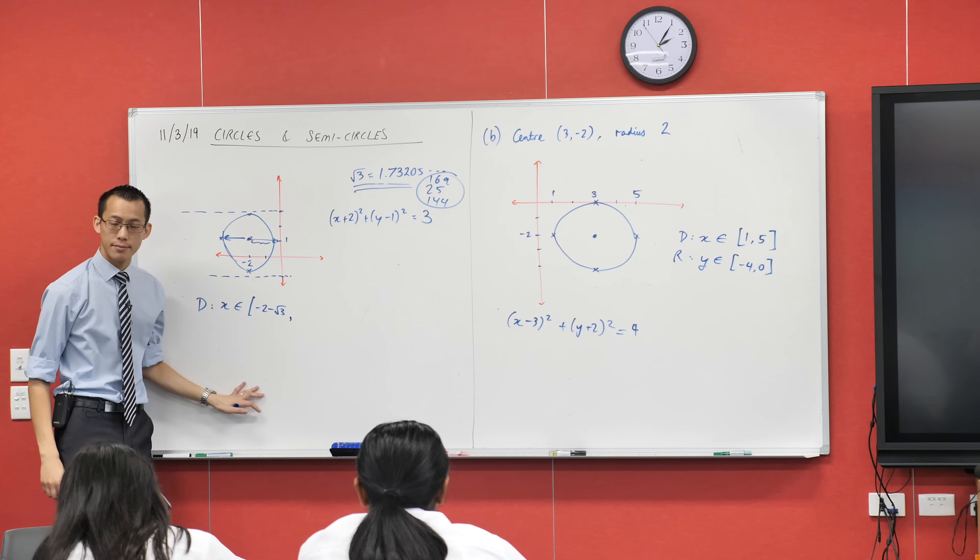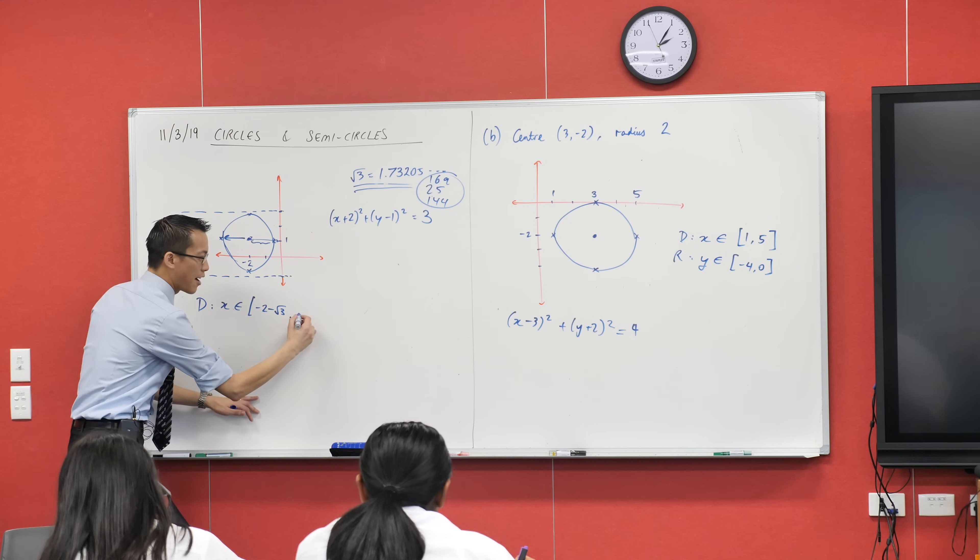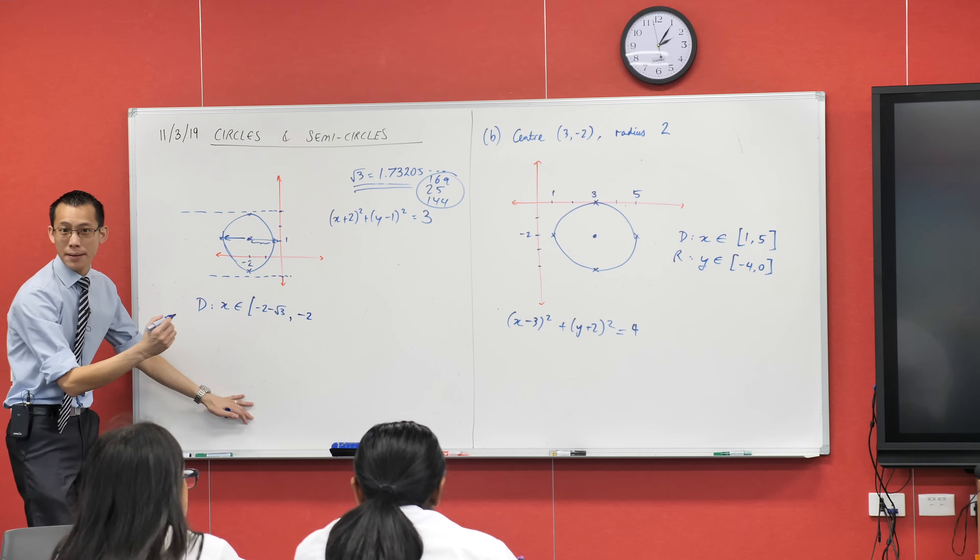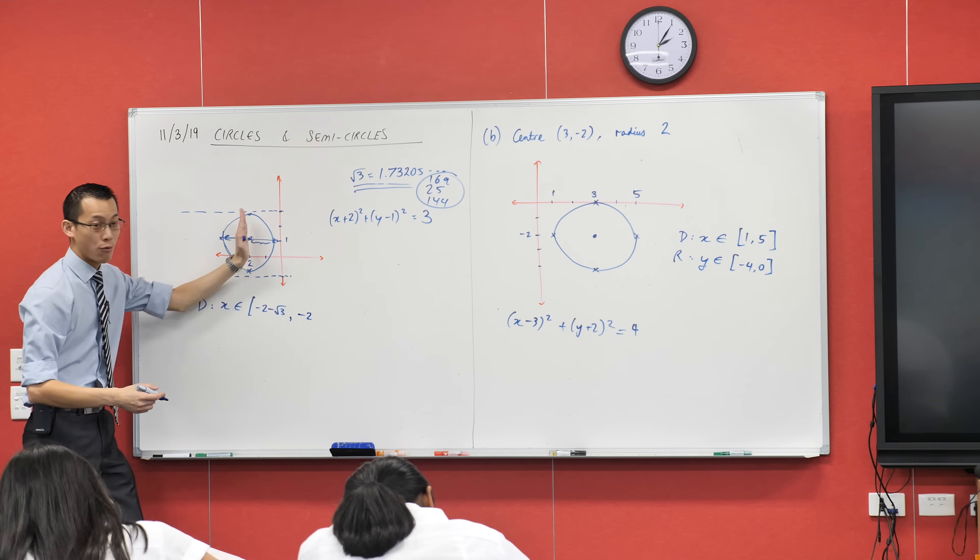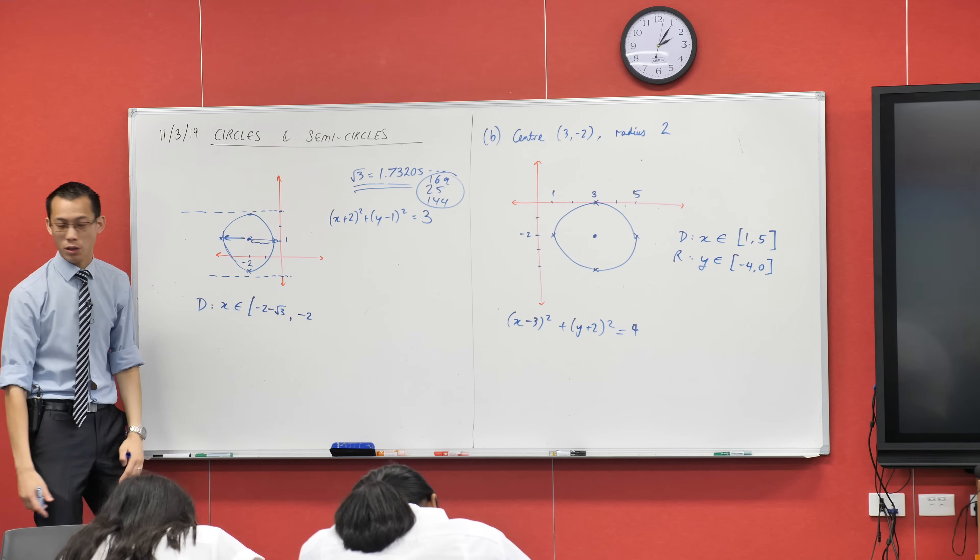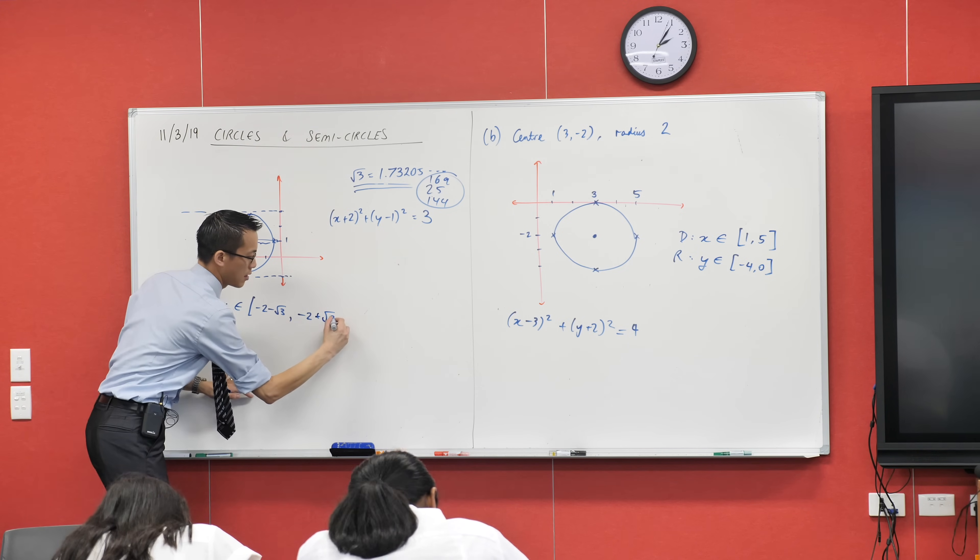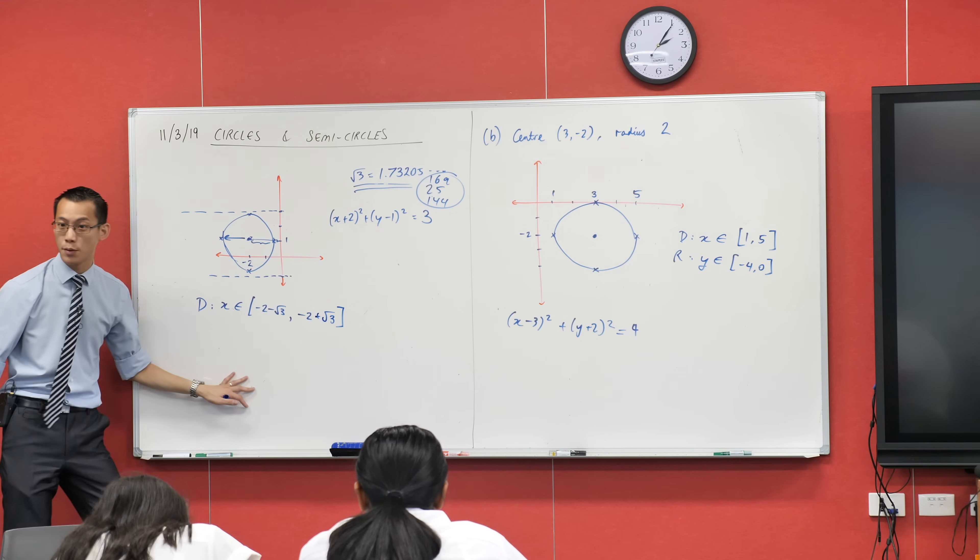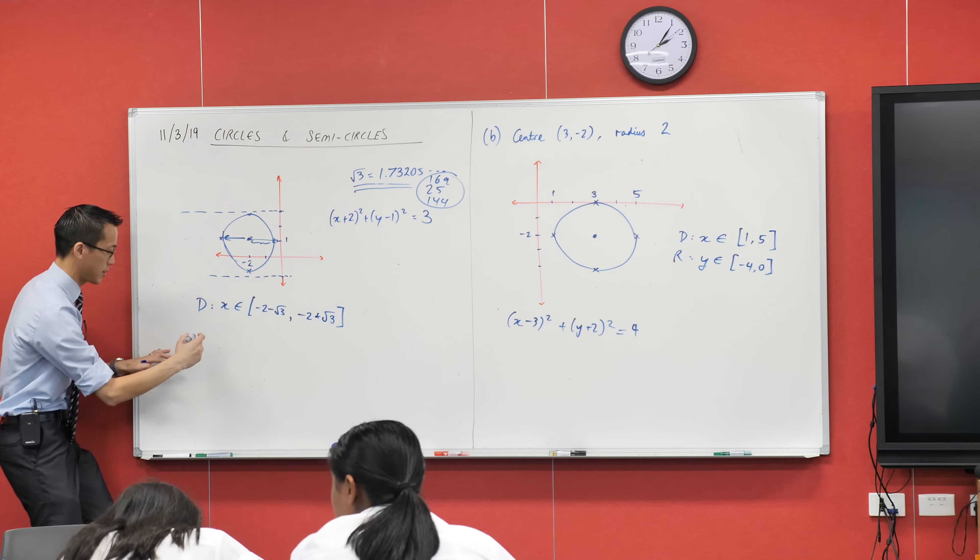What about my rightmost point? Negative 2 plus. Yeah, I start from the center again. But then instead of going to the left, I'm going to the right the same distance, root 3. So to the right means that guy. And as we've already established before, you can actually get to these endpoints, hence the square brackets.